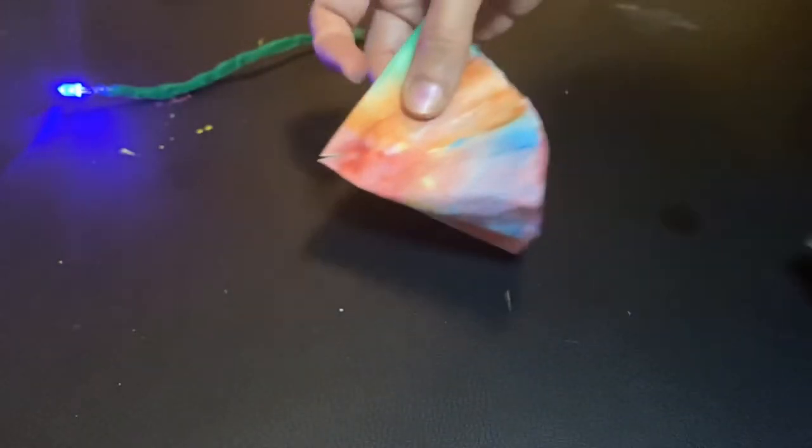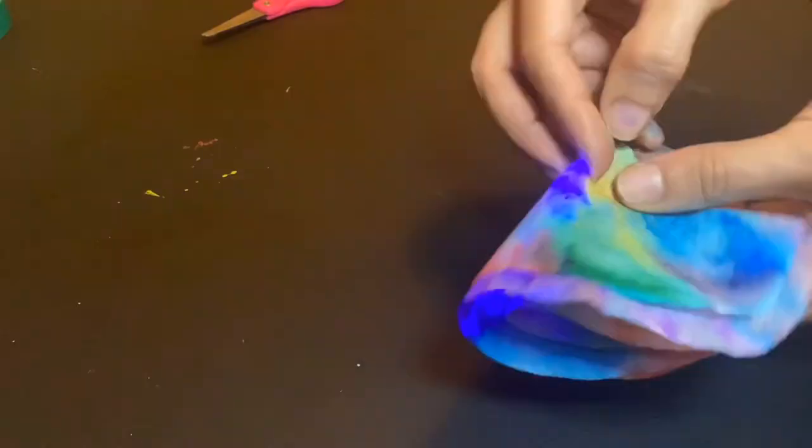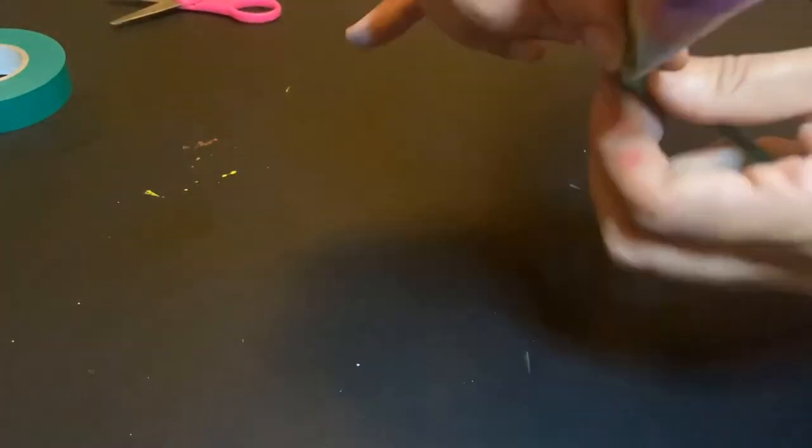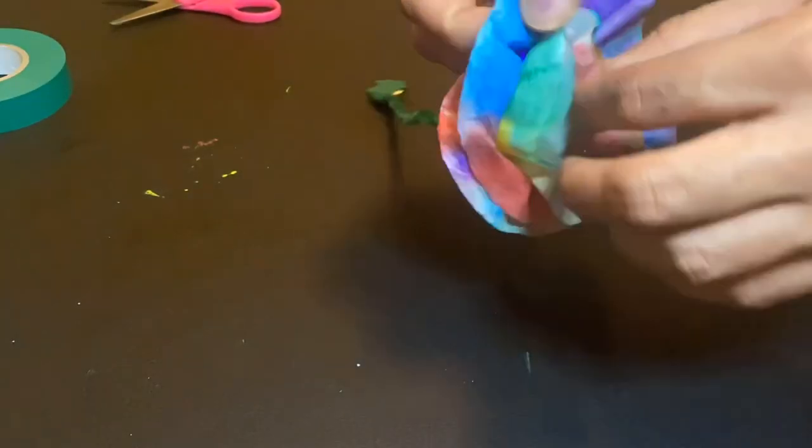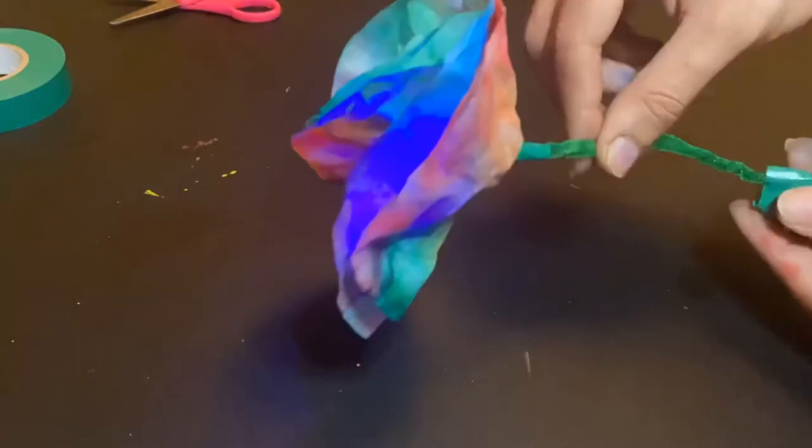Then you'll just want to stick your light circuit through the hole, push it down enough that you're not crossing the wires, and you can tape it at the bottom to stay in place. Fan out your paper to expose your light.